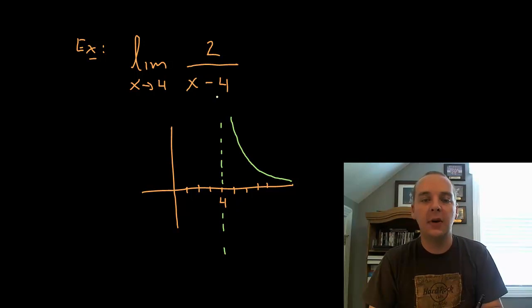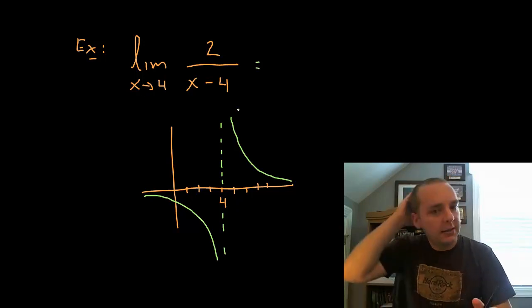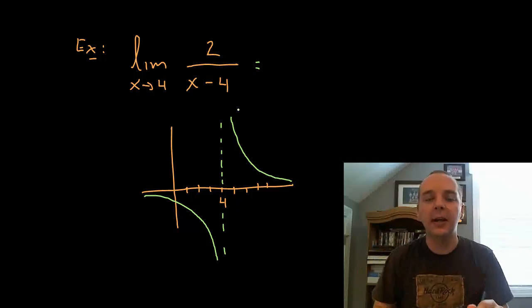But if you add an x value to the left of 4 like 3.9 or 3.99 it would be a large negative number for the quotient and so it would tend towards negative infinity. Well this is a little different because one side goes to positive infinity and the left side goes to negative infinity.